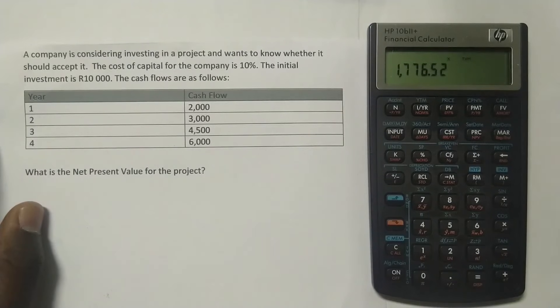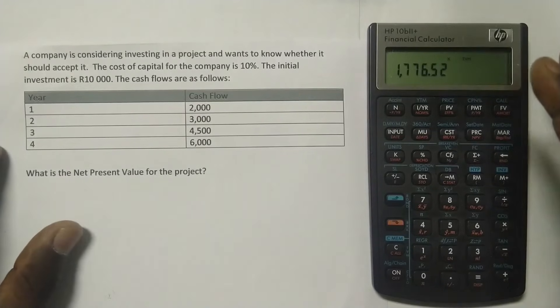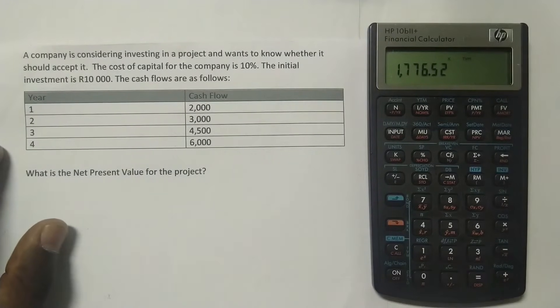Now, we've done another lesson where we used the table to do the net present value. You'll find the link in the description below for that lesson as well. And you'll also get to know what the NPV is and how it works. But in this case, if NPV is positive, you accept the project. If it's negative, you reject the project.